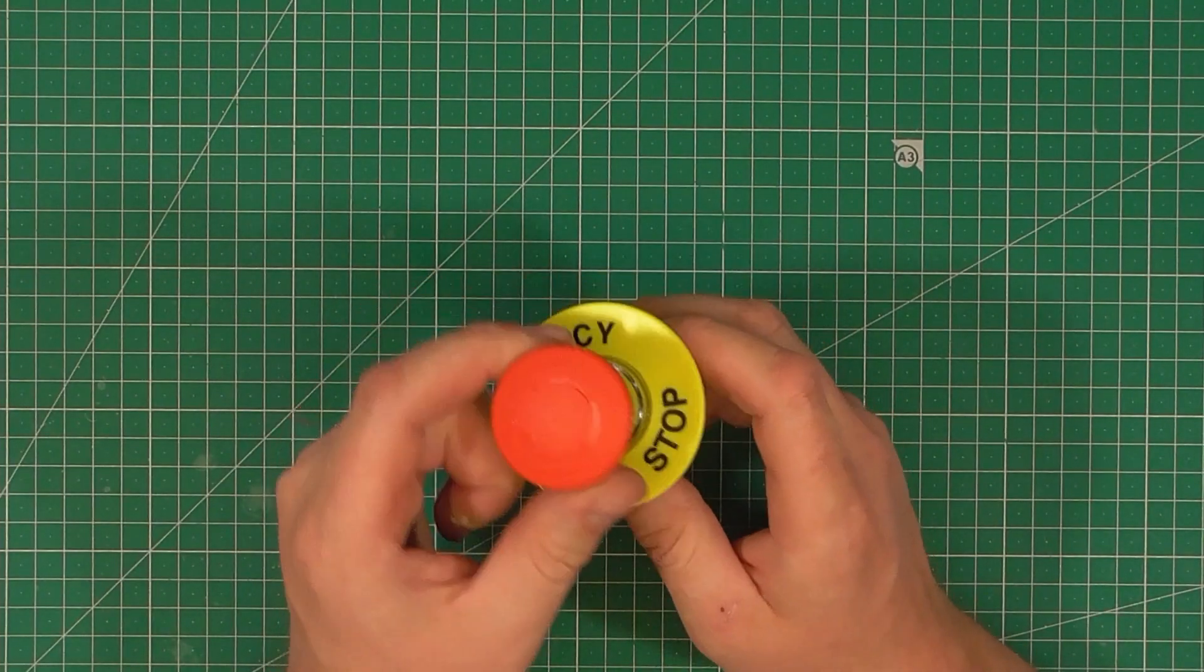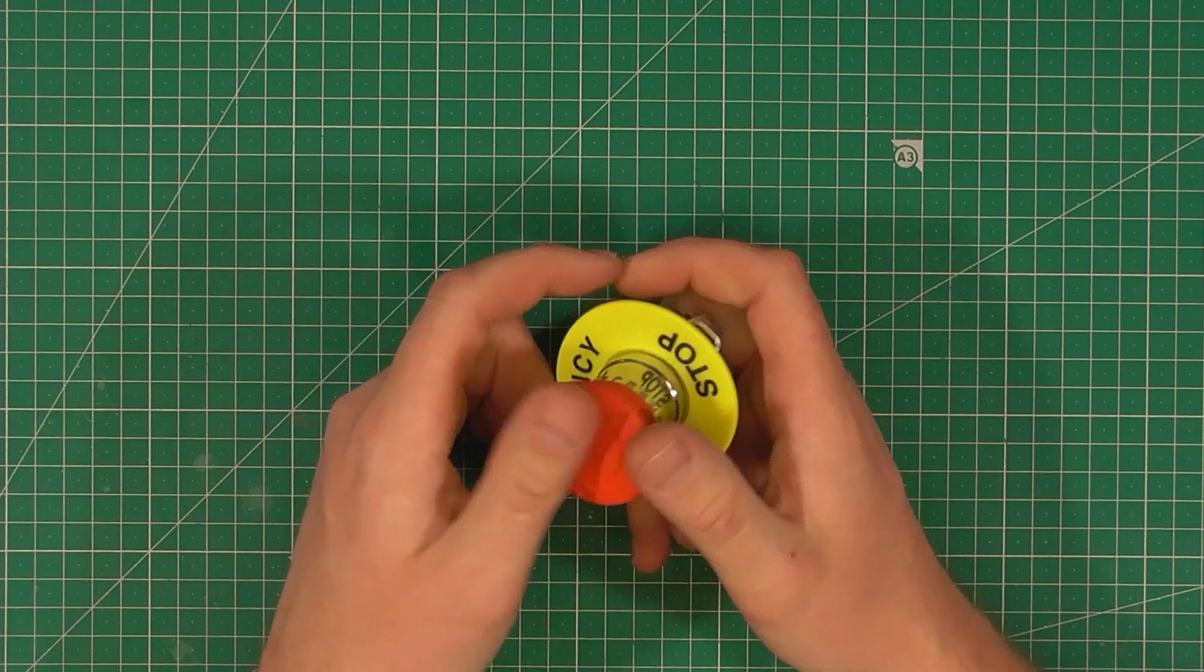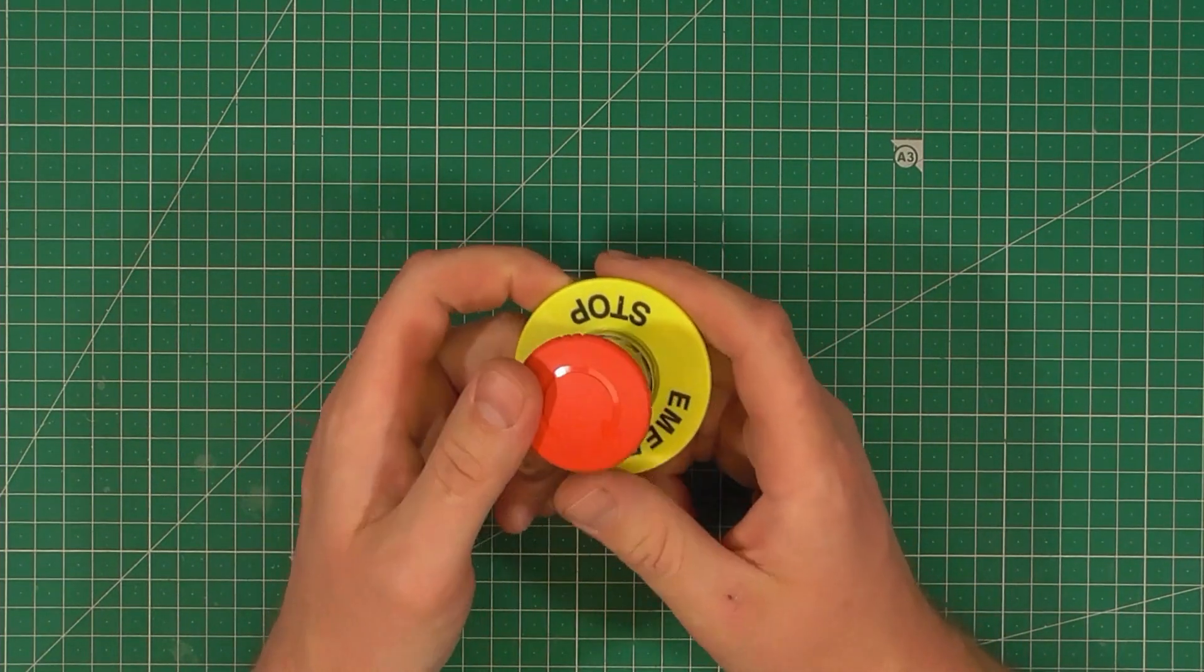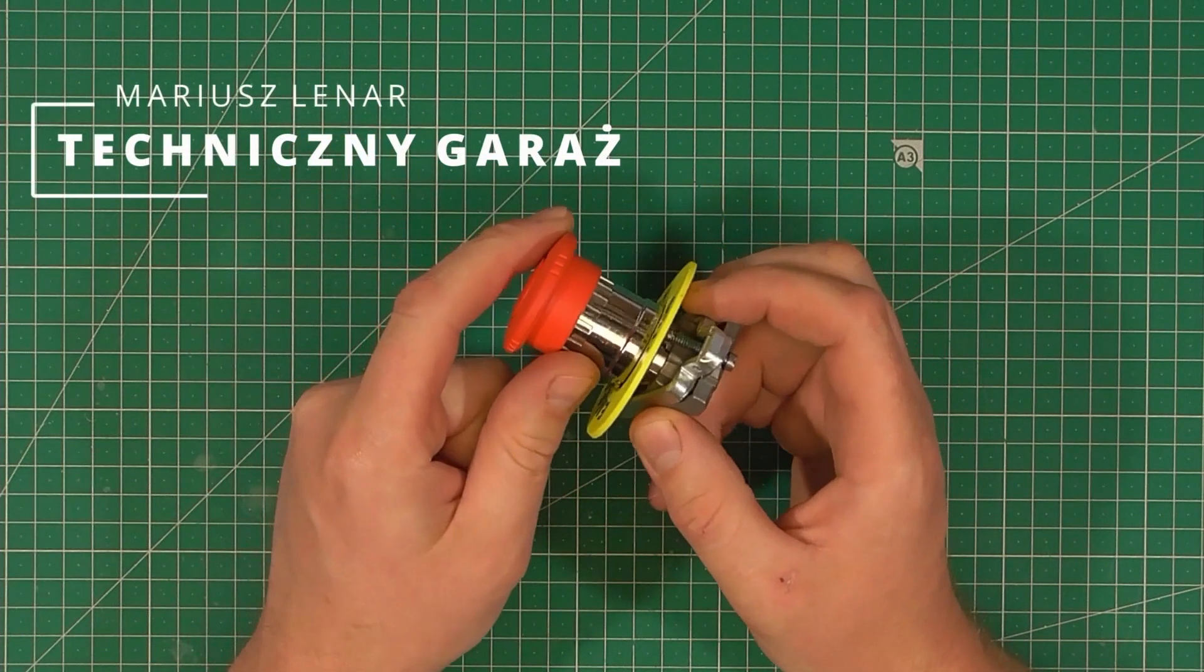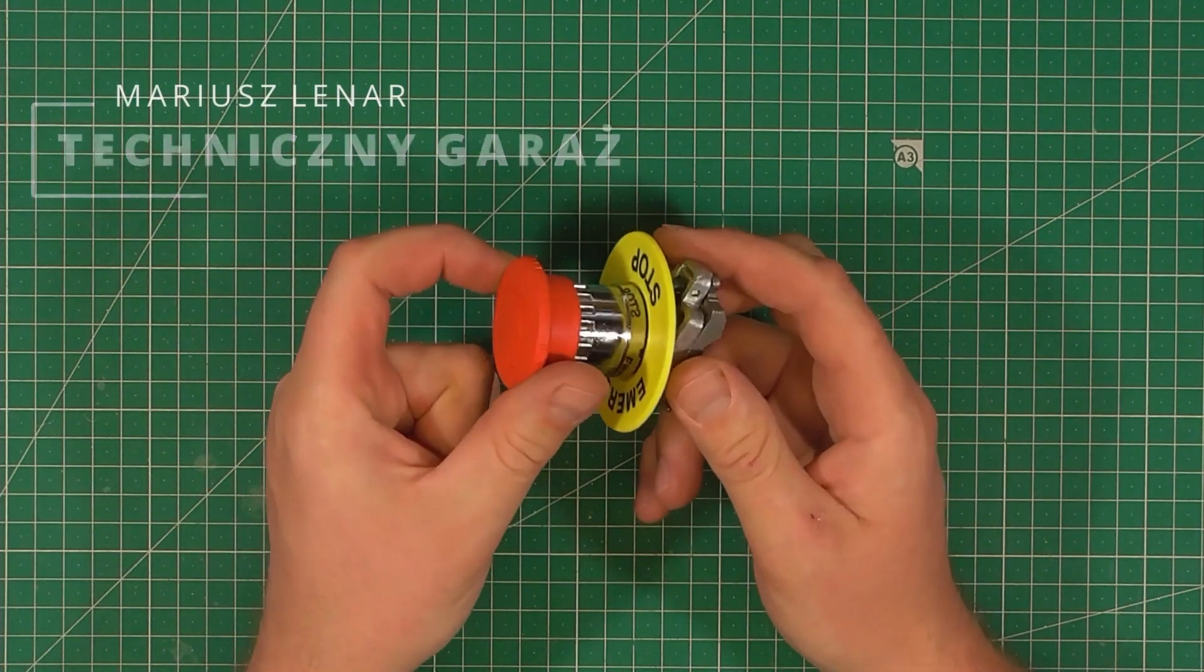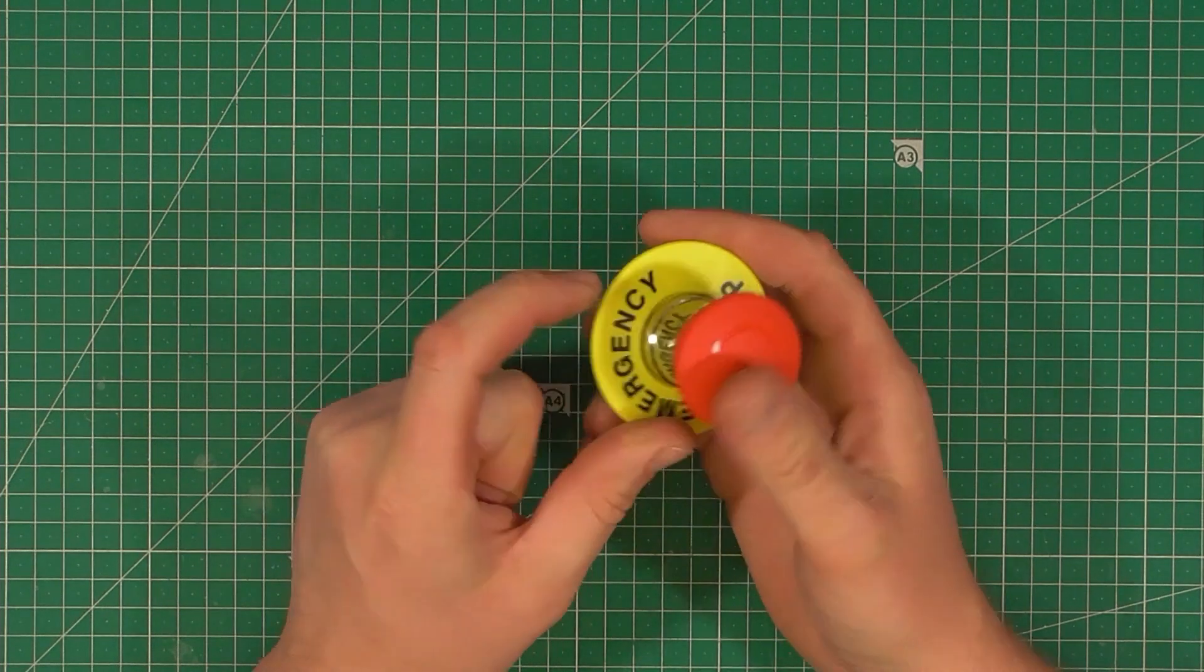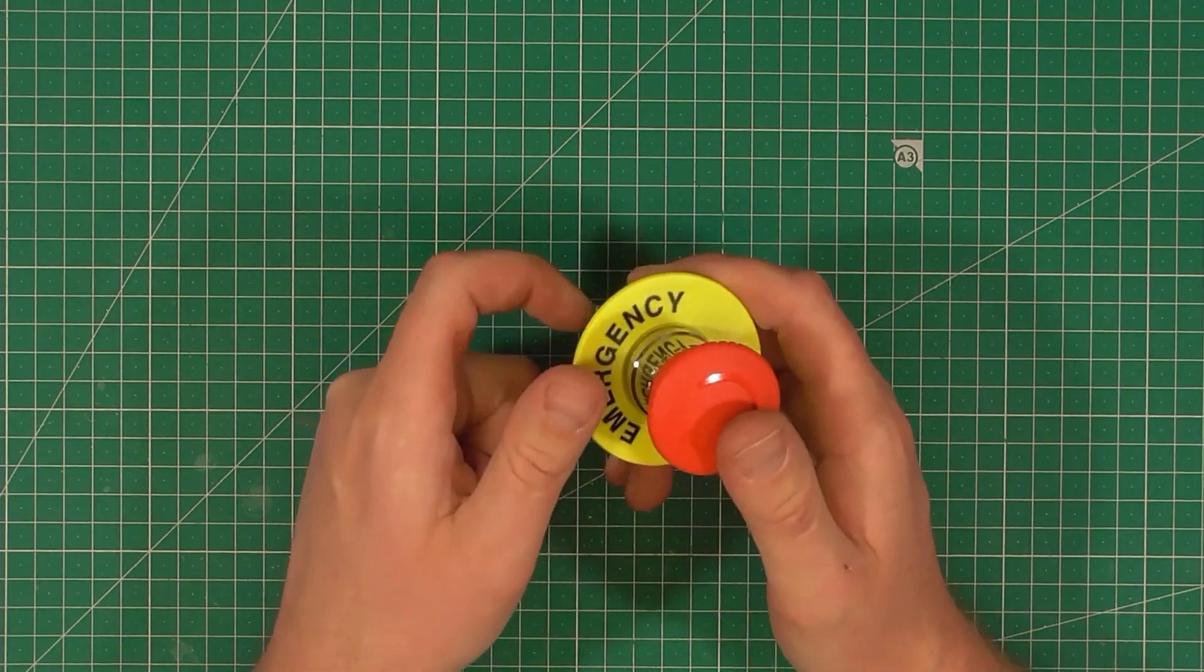We're using emergency buttons to stop the machine in unexpected or dangerous situations, and the machine should stop immediately. The law says that we must use emergency stop circuits.